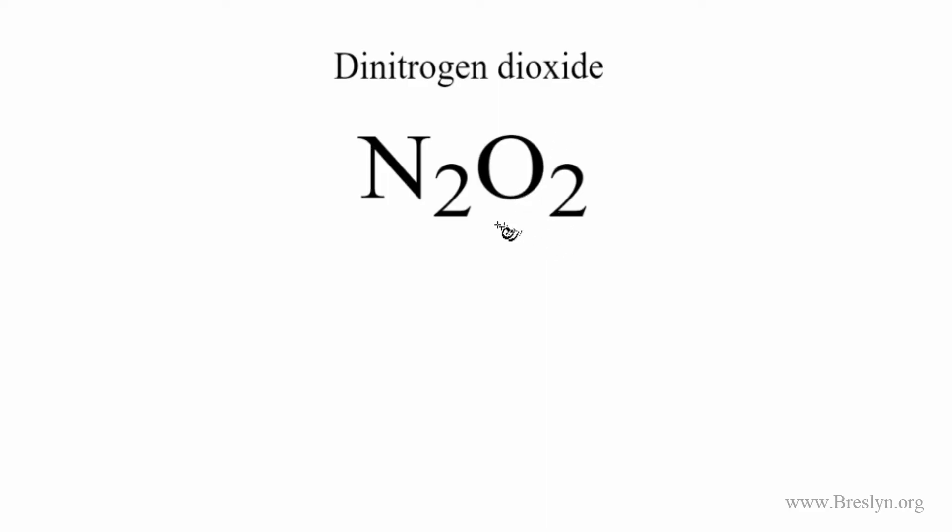So the first thing we need to do is count the valence electrons up for this N2O2 molecule. Nitrogen on the periodic table, that's in group 5A, also called 15. It has five valence electrons. We have two nitrogen atoms. Multiply that by two.